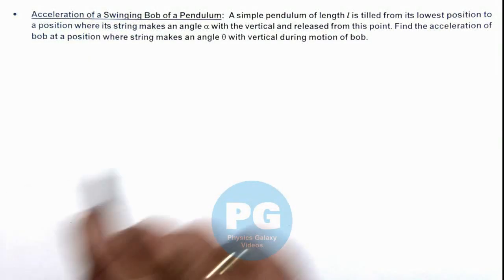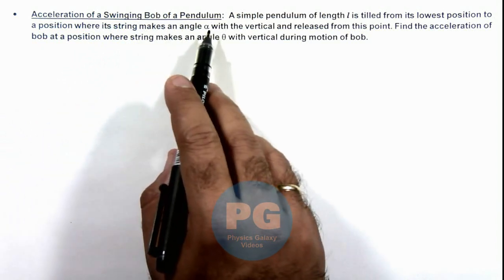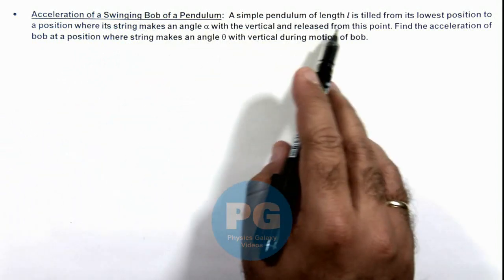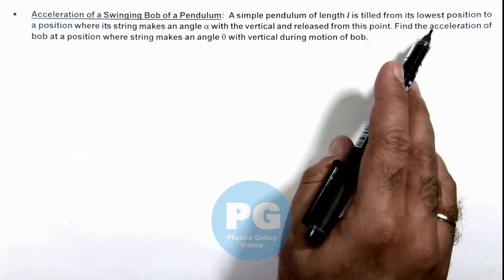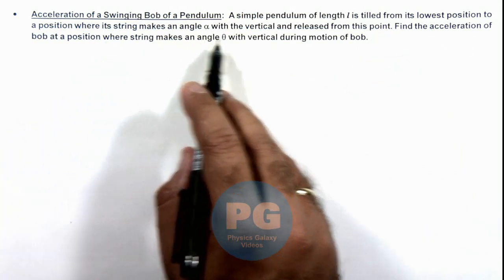Let's now discuss the case of acceleration of a swinging bob of a pendulum. We are given that a simple pendulum of length l is tilted from its lowest position to a position where its string makes an angle alpha with the vertical.